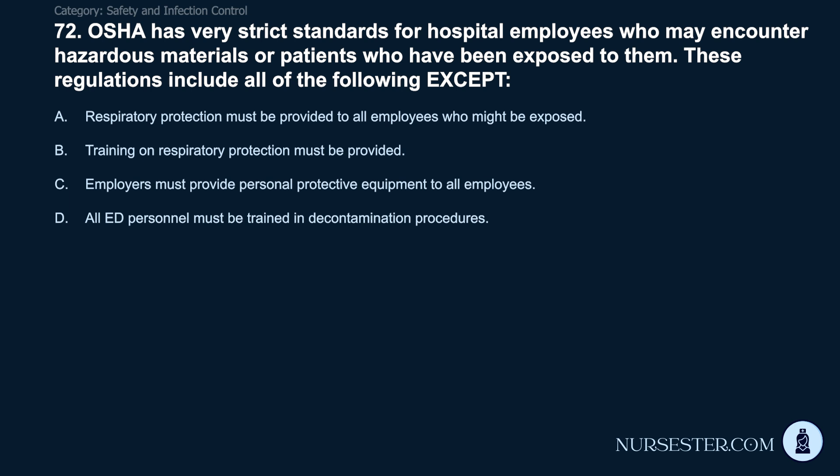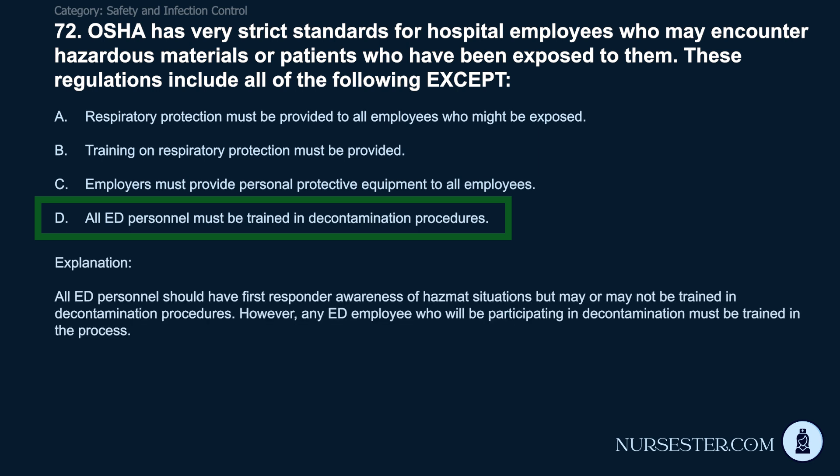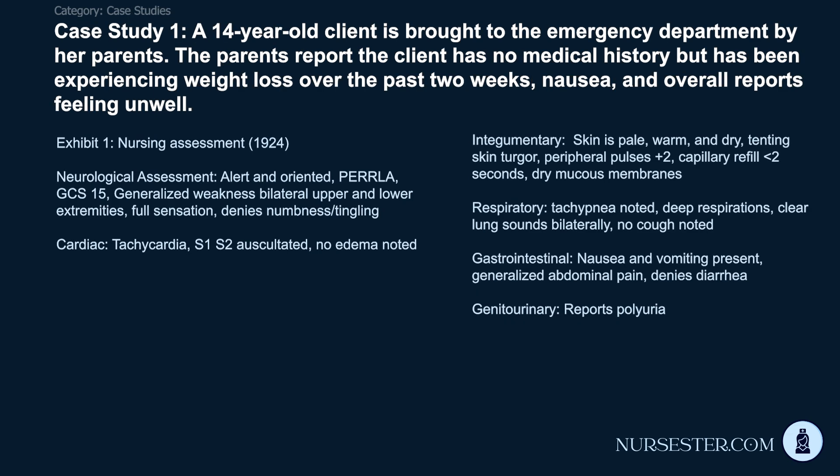Question 72: OSHA has strict standards for hospital employees who may encounter hazardous materials. These regulations include all of the following except: A) Respiratory protection must be provided to all employees who might be exposed. B) Training on respiratory protection must be provided. C) Employers must provide personal protective equipment to all employees. D) All ED personnel must be trained in decontamination procedures. Correct answer: D. All ED personnel should have first responder awareness of hazmat situations but may or may not be trained in decontamination procedures. However, any ED employee who will participate in decontamination must be trained in the process.